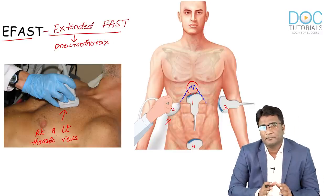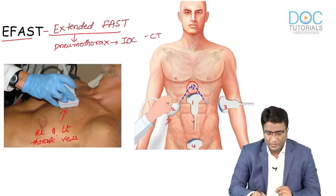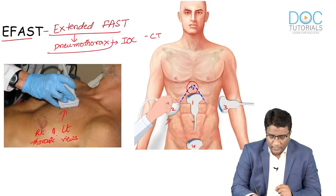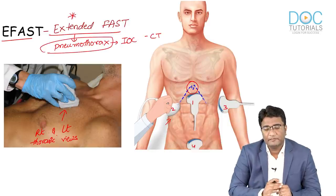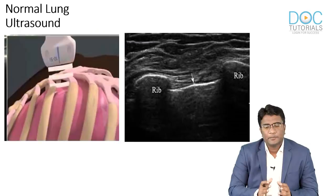The investigation of choice for pneumothorax is CT scan. However, in the emergency room, extended FAST or eFAST is a very good technique — much better than radiographs — to evaluate for pneumothorax. Now let's understand some normal lung ultrasound findings before evaluating patients with pneumothorax on ultrasound.